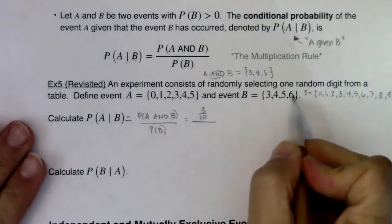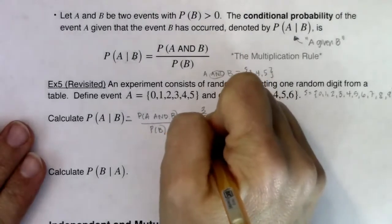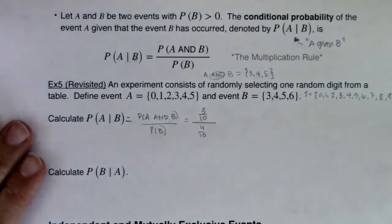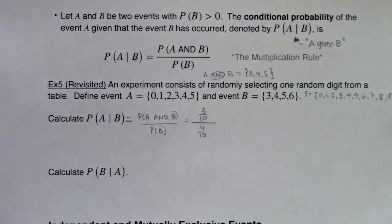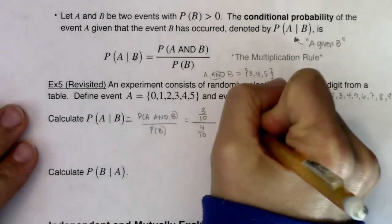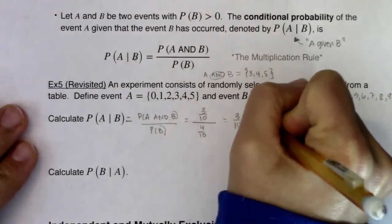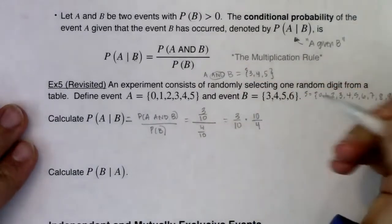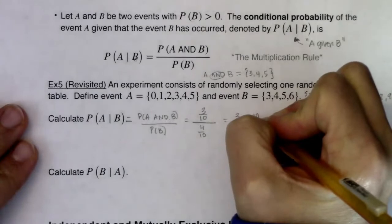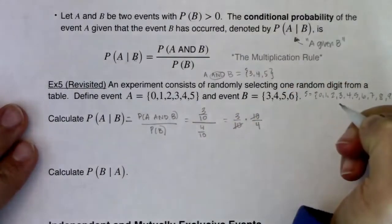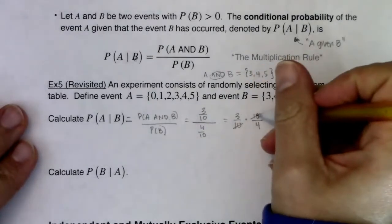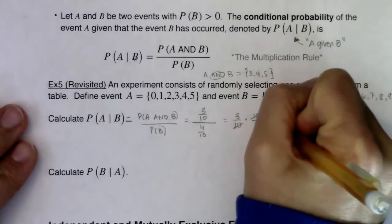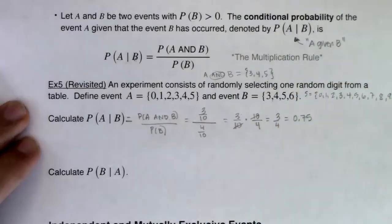As we work through this: fraction divided by a fraction means we multiply by the reciprocal of the denominator. So that's 3/10 times 10/4. There's a 10 in the numerator and a 10 in the denominator — they cancel out. So we're looking at 3/4, or the decimal 0.75.